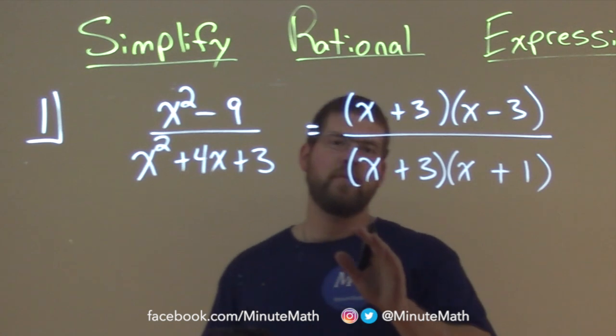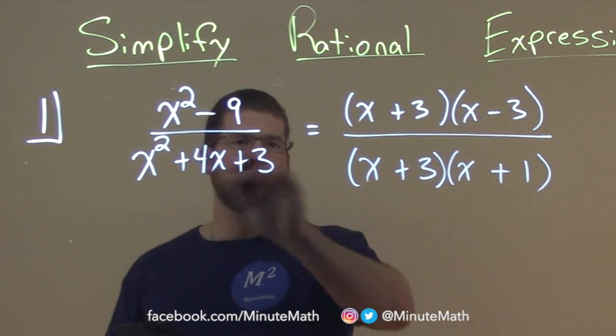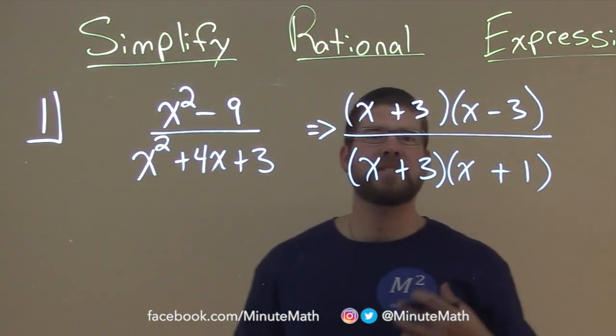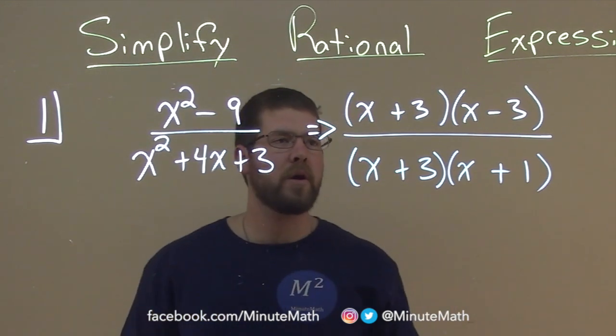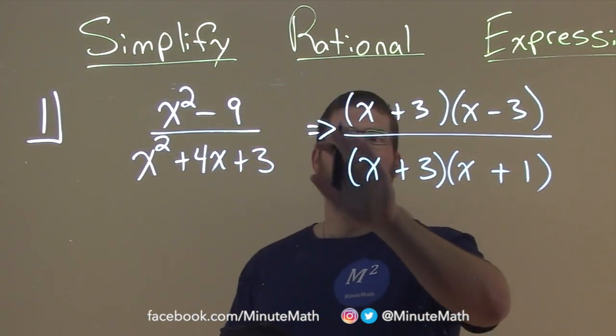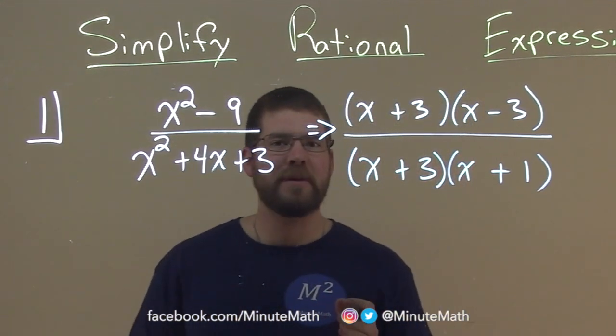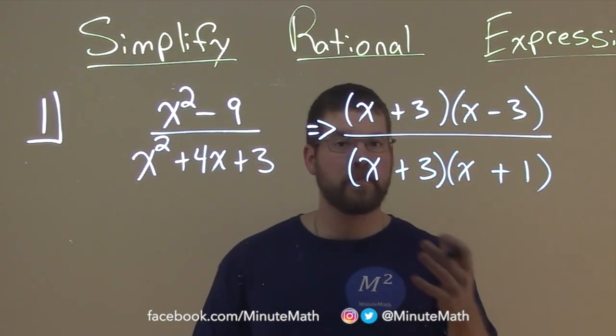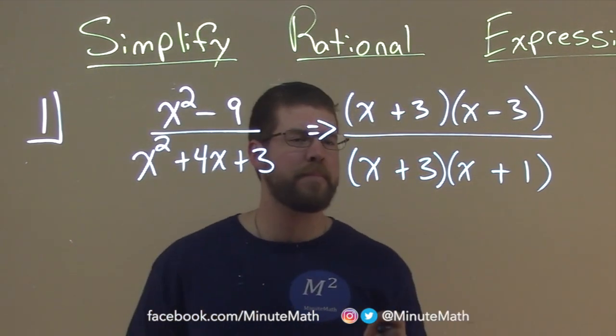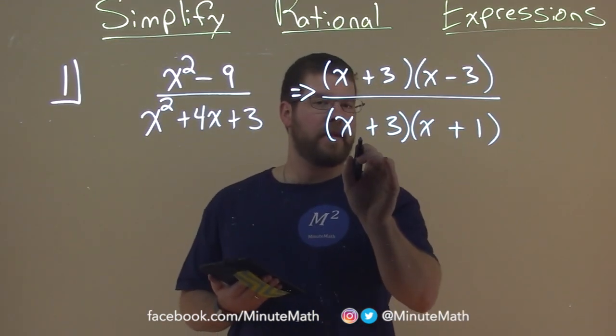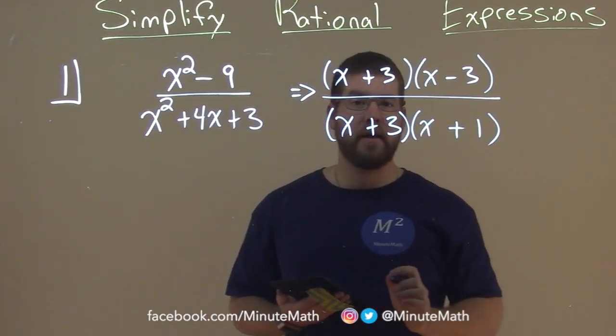So now we have the same expression, let me put an arrow here, same expression as written before, but notice that we have the numerator and denominator factored. And this allows us to eliminate some parts here, simplify what we're trying to go for. We see an x plus 3 in the denominator and an x plus 3 in the numerator.